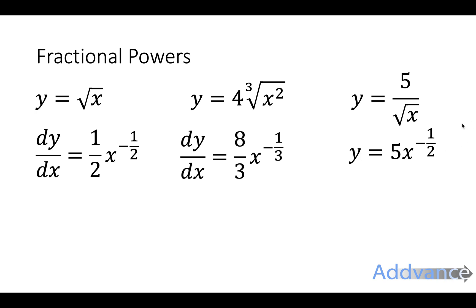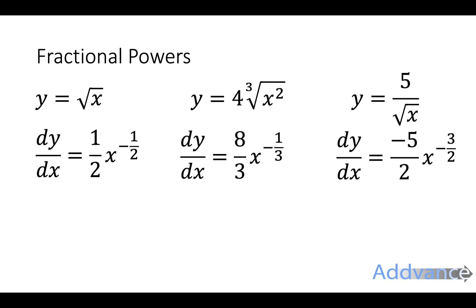Finally, we multiply down by the power and take one off. 5 times minus a half, and then minus a half minus 1 is minus 3 over 2. So it will look like that, and that's how you differentiate those.